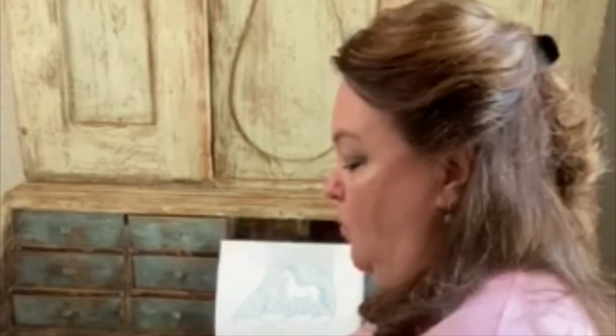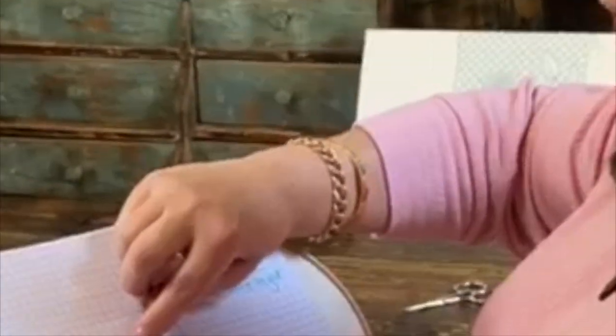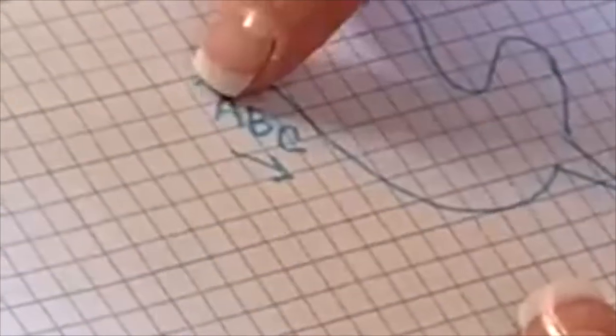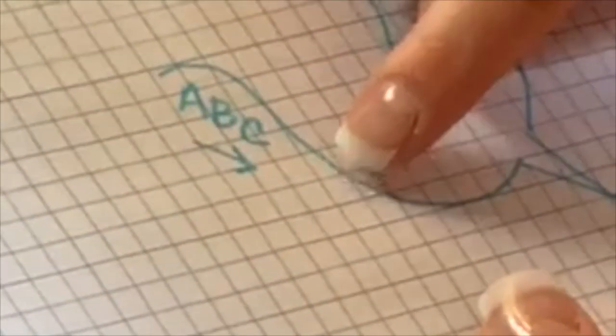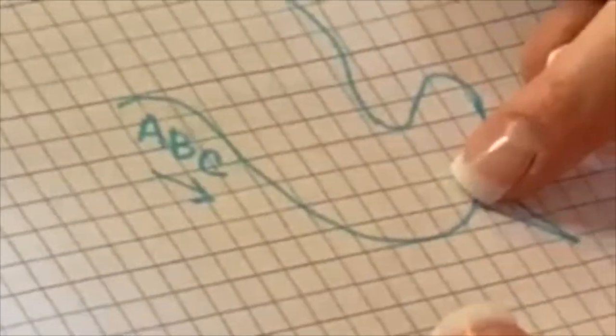So before we begin I've come up with a little method to help in doing this stitch. It's an ABC method so you always work from left to right and we'll be doing ABC ABC ABC until you work all the way up to the horn.